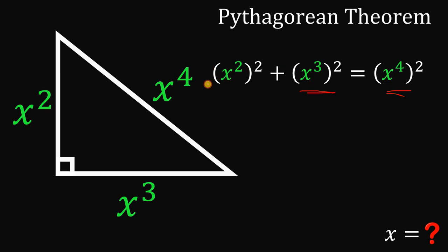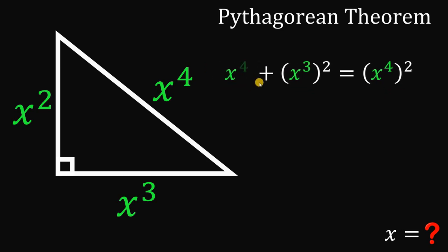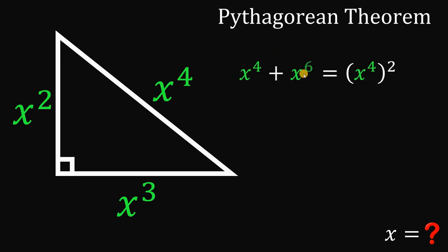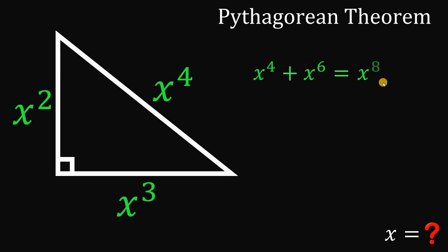Let's simplify. x squared raised to the power of 2 simplifies to x raised to the fourth power. Next, x cubed raised to the power of 2 can be written as x raised to the power of 3 times 2, which equals x raised to the sixth power. And x raised to the fourth power squared simplifies to x raised to the eighth power.